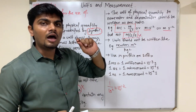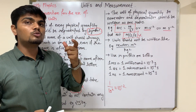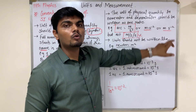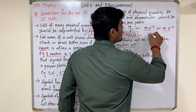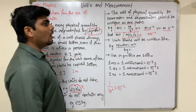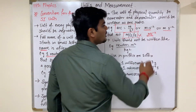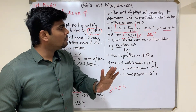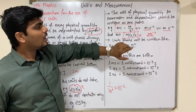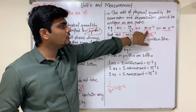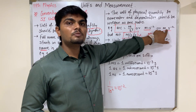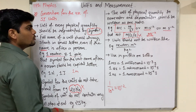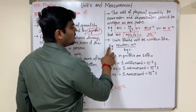The fifth convention relates to writing multiple units together. When combining two units, you should put a hyphen or a space between them. Do not write them joined together without any gap, otherwise they can be misread — for example, 'ms' without space could be read as 'millisecond' instead of 'meter second.' Always maintain a proper space or hyphen between units.